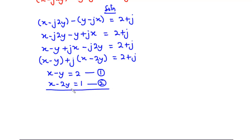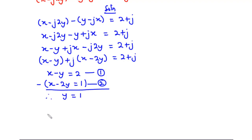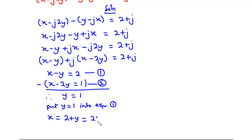Using the method of elimination: subtracting equation 2 from equation 1, the x terms cancel. Negative y minus negative 2y gives y, and 2 minus 1 gives 1, so y equals 1. Substituting y equals 1 into equation 1: x equals 2 plus y equals 2 plus 1 equals 3. Therefore x equals 3 and y equals 1.